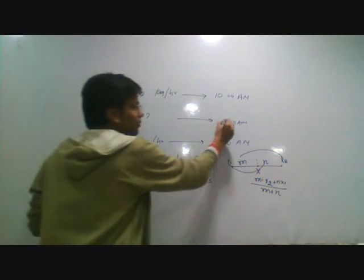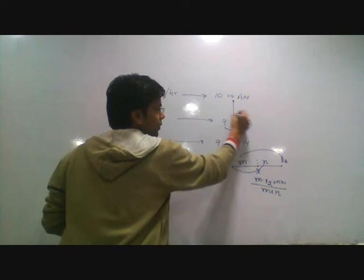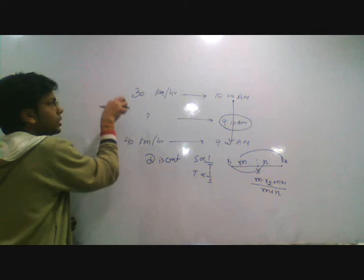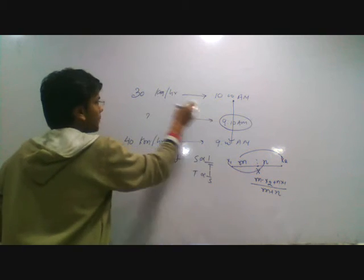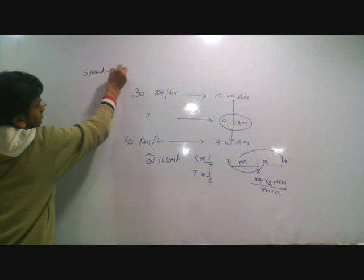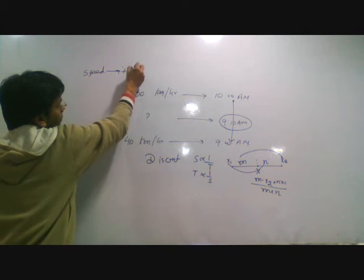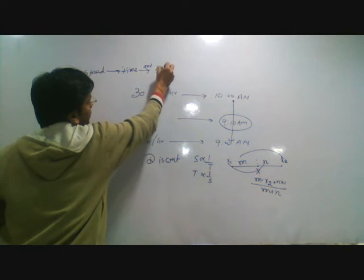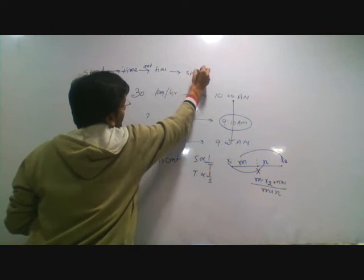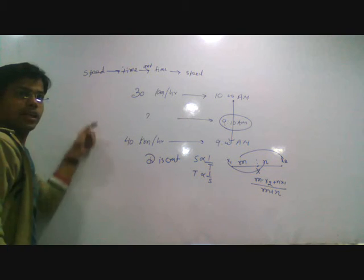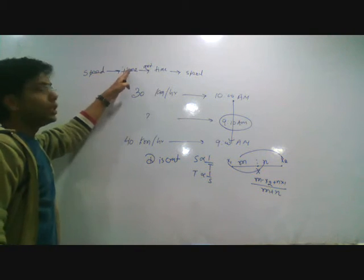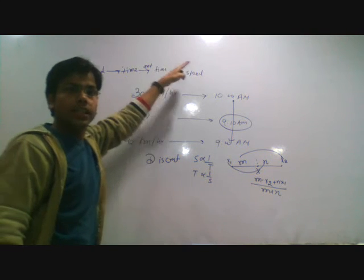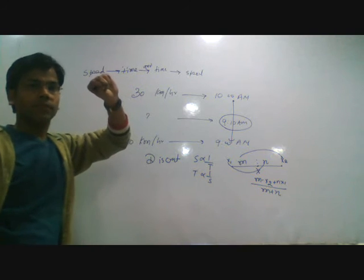Now check. Since we have question in time, we have to find the question in time and answer should be in speed. So our method should be since it is time, we have to change our given speed into time frame, then find answer in time frame and change into speed. What I am doing is speed change into time frame because question is in time frame, answer in a time frame and change answer into speed frame.